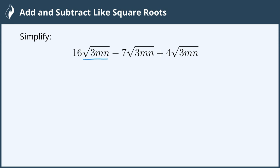And in this case, square root of 3mn, square root of 3mn, and square root of 3mn are exactly the same, which means we can add and subtract the coefficients out in front.